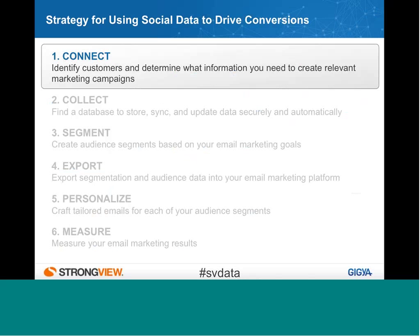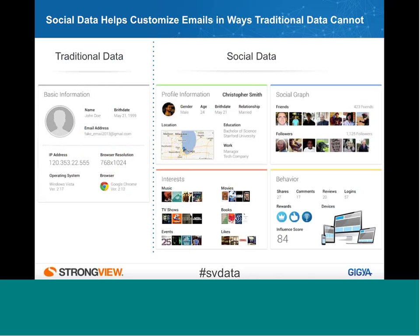We're going to start with how do you access rich social data — that's really the starting point for increased relevance through social. We're trying to move from knowing very little about consumers through traditional registration data to gaining richer access to even more data. The types of things you get from social data include profile data — gender, age, birth date, relationship, education — as well as interest graph data, such as favorite movies, TV shows, books, and many other pieces of content.